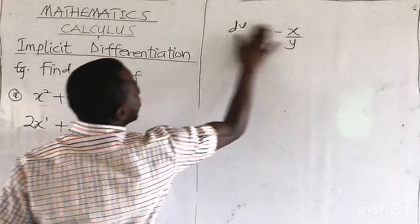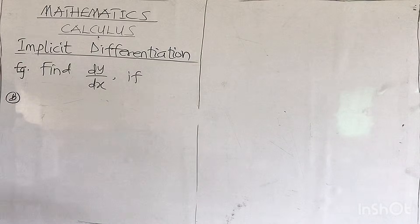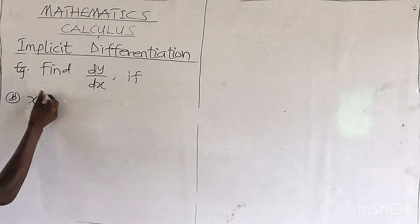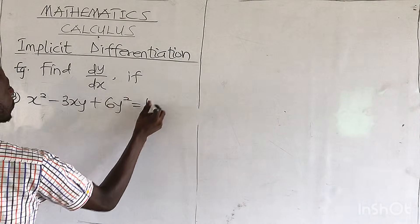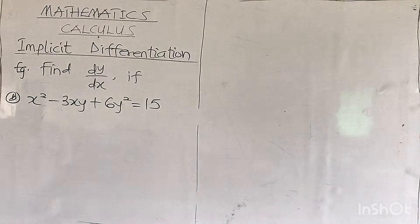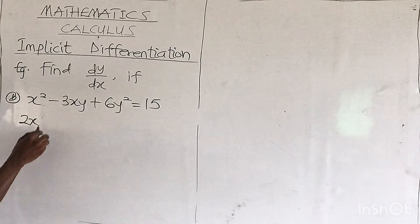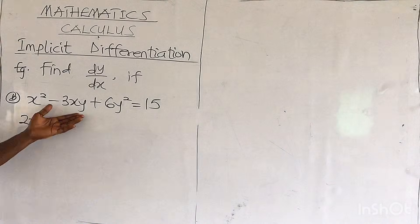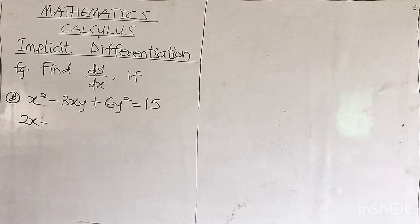So negative x over y will be the final answer when differentiating x squared plus y squared equal to 0. Now let's look at the second example. We have x squared minus 3xy plus 6y squared is equal to 15. When differentiating, we start from x squared. When you differentiate x squared, we have 2x. Now over here, because xy is multiplying, we treat it as a product. In that case, we are going to use the product rule.